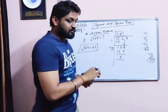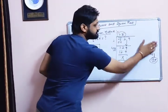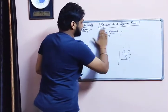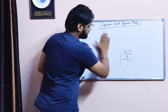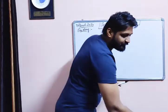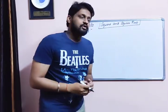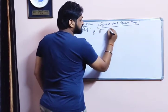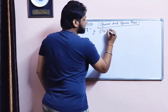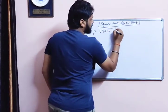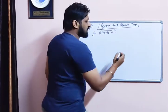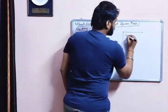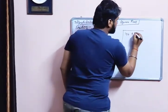So let's see one more question based on this. If we have to find the square root of 4096 by the same division method, how will we find it? The number is 4096.